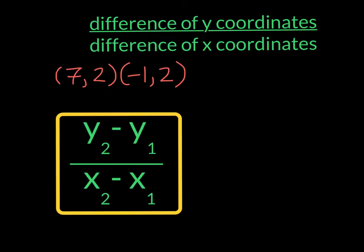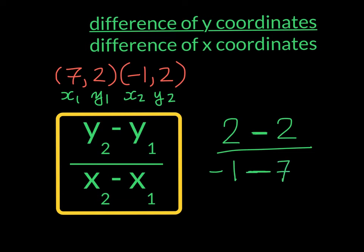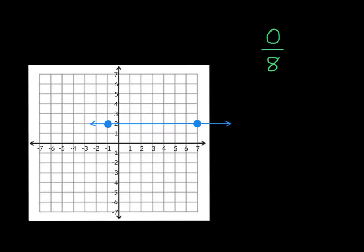Here's our next example. We're going to label our points. This is x1, y1, x2, y2. And I'm going to place them directly in the equation this time. So I have 2, the minus from the equation, minus 2. In my denominator, my x2 is negative 1. I have a minus from the equation, and I have 7. So in the numerator, 2 take away 2 is going to give me 0, and in the denominator, I'm going to have negative 8. This we've seen before, this is 0 slope. And I'm going to show you what it looks like.